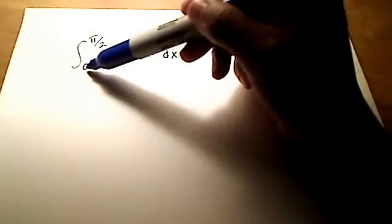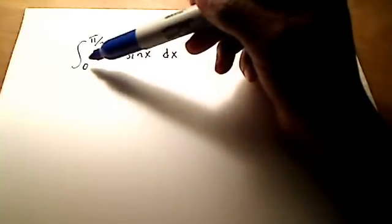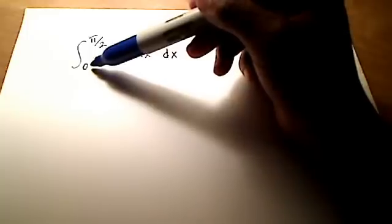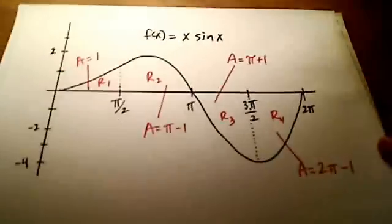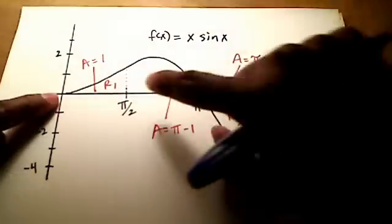And its lower bound is 0 and its upper bound, sometimes they're called limits here, but not to be confused with derivatives and limits, that type of thing. So we'll call them bounds here. Our lower bound is 0 and our upper bound is pi over 2. Well here's our function.